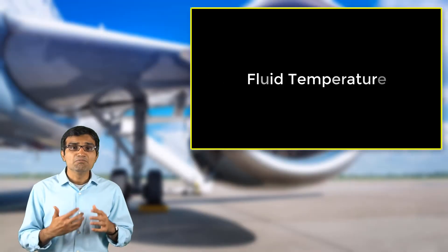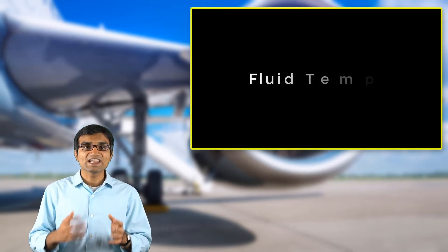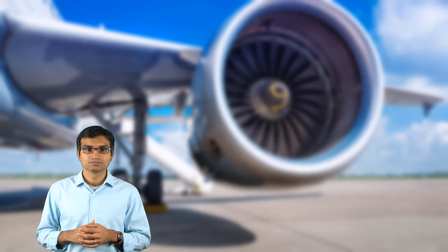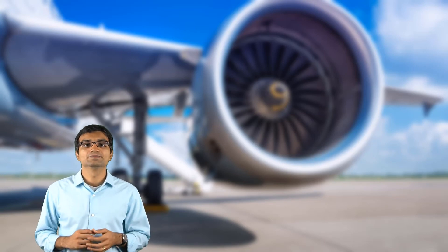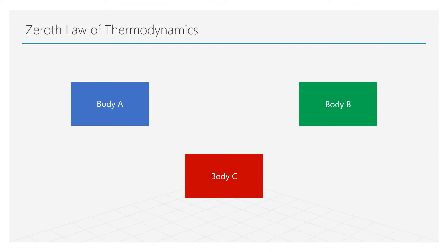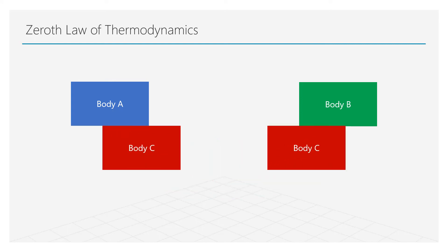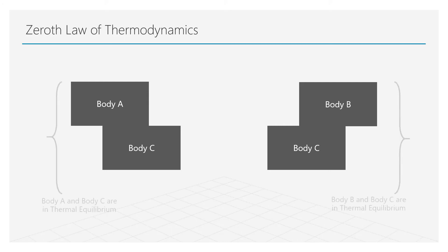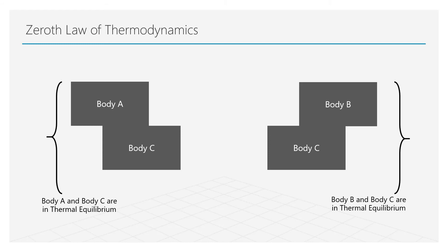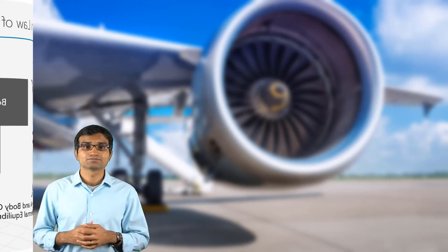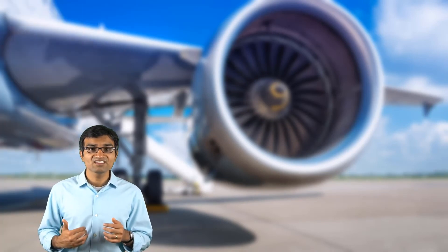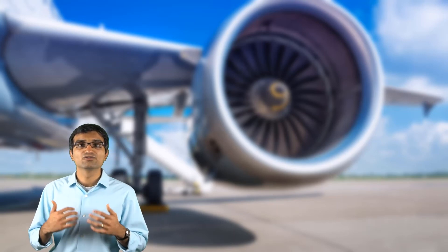Temperature of a body is its measure of hotness or coldness, and this is very much applicable in the case of fluids as well. It provides a sense of internal energy stored within the fluid. Energy can be exchanged between two bodies, and this heat transfer will continue until they reach an equilibrium temperature, after which the energy exchange stops. Temperature is therefore governed by the zeroth law of thermodynamics, which states that two bodies A and B which are in thermal equilibrium with a third body C are in thermal equilibrium with each other. The temperature of a fluid can be a function of both space and time, and can also change with fluid density and pressure.